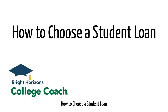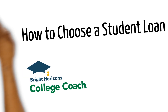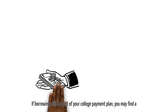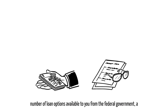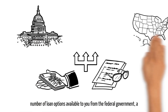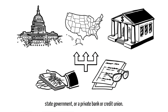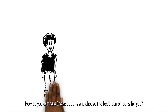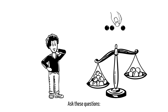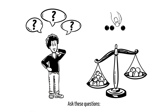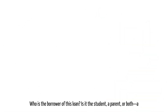How to choose a student loan. If borrowing will be part of your college payment plan, you may find a number of loan options available to you — from the federal government, a state government, or a private bank or credit union. How do you compare these options and choose the best loan or loans for you? Ask these questions.